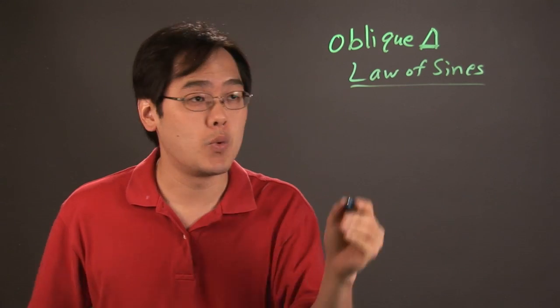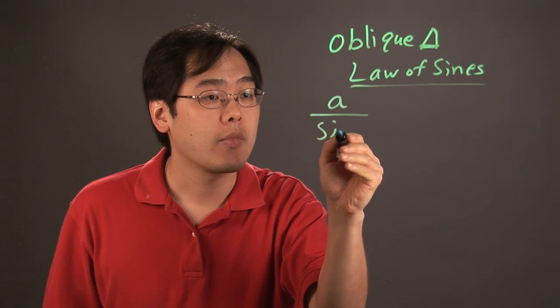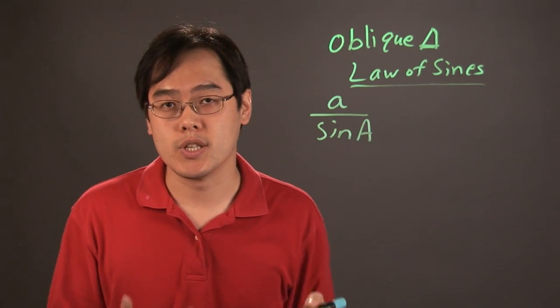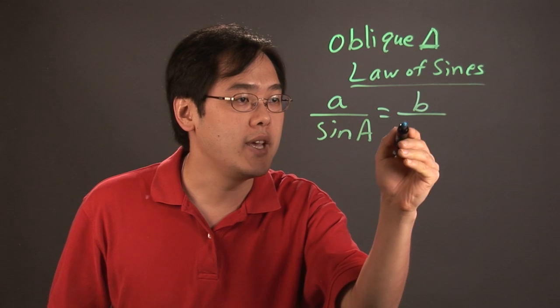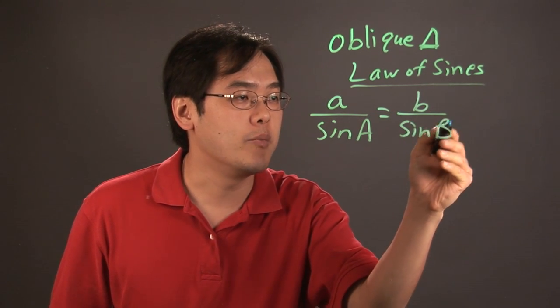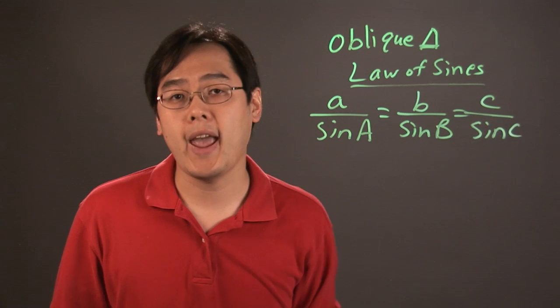Now here's how this works. It's side a over sine of angle A, which is the angle opposite the side, and that's equal to side b over sine of angle B equal side c over sine of angle C.